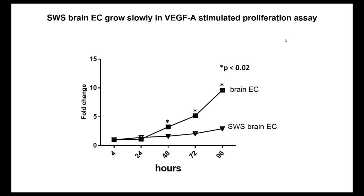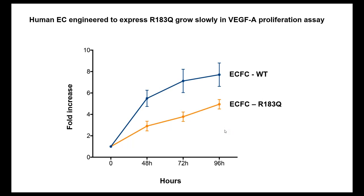We also looked at proliferation of mutant endothelial cells. In a VEGFA-stimulated proliferation assay over four days, normal brain endothelial cells grow nicely, but Sturge-Weber brain endothelial cells — a mix of mutant and non-mutant — grow much more slowly. We see the same thing when we introduce the mutation by lentivirus: both wild-type GNAQ and mutant GNAQ slow down proliferation of the very robust ECFCs. Something about the mutation dampens down proliferation, which is consistent with what we see in vivo.